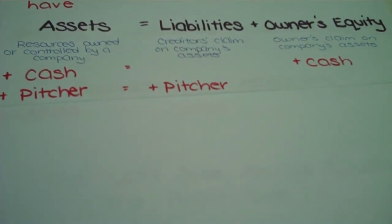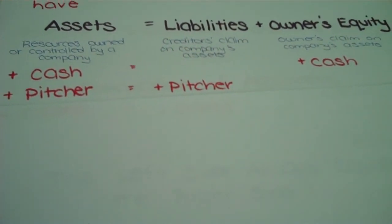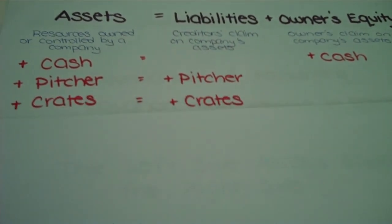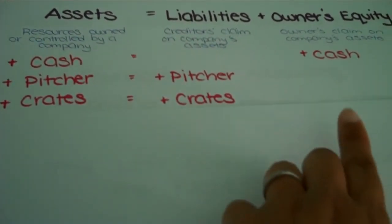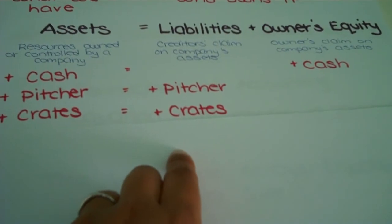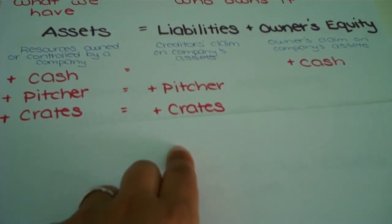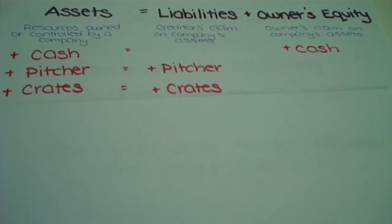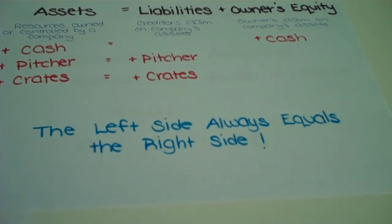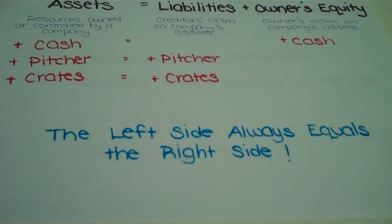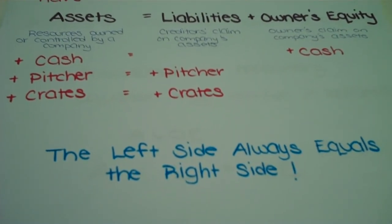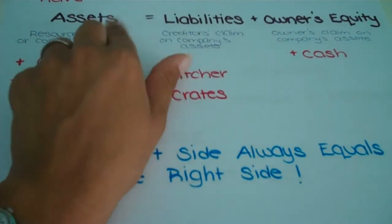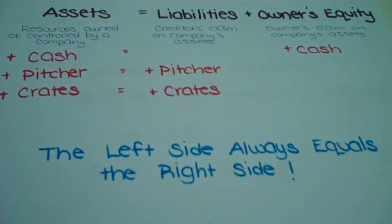Let's say your dad goes to the garage and has some crates he's willing to lend you to make your lemonade stand out of. So now the company has crates. But again, that didn't come from you — it came from your father, and he's going to want those back when you're done. In all of these examples, you'll notice that the left side of your equation always equals the right side. So this equation is in balance — the sides are equal to one another.